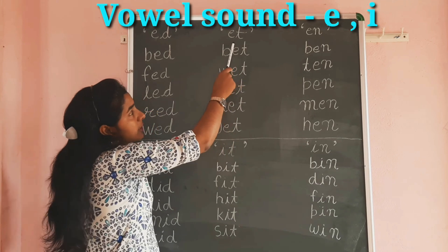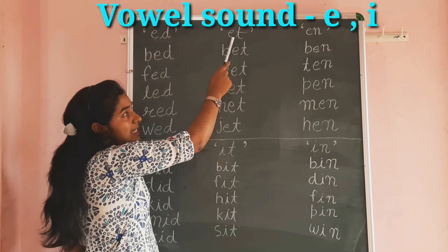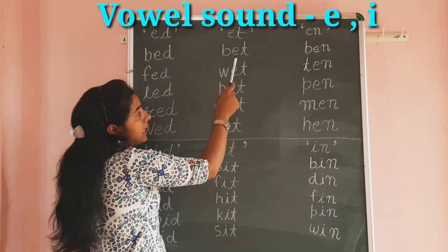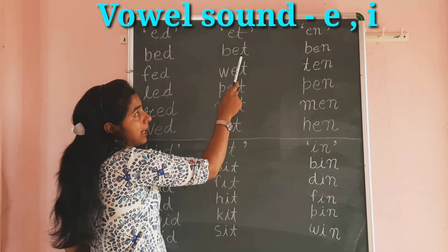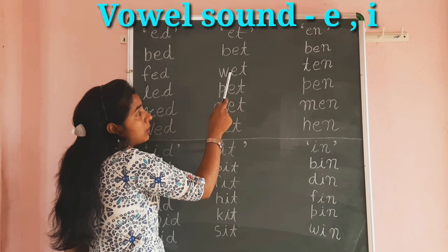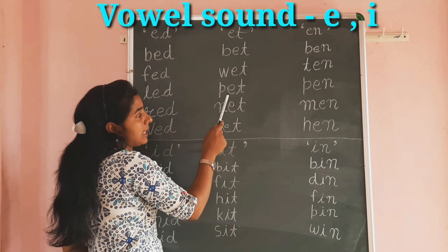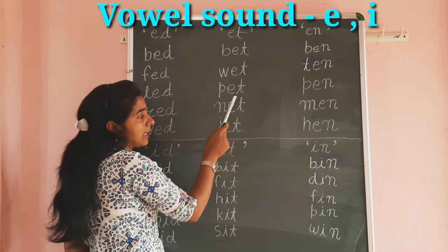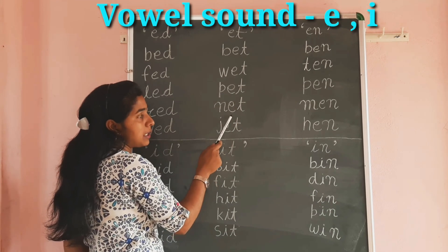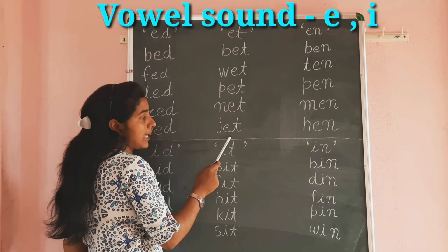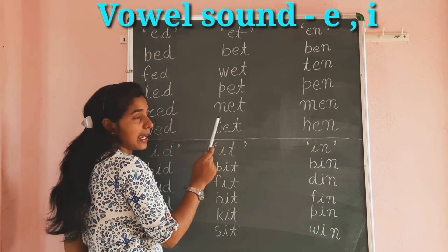Now we make words with the help of E-T: B-E-T, Bet. W-E-T, Wet. P-E-T, Pet. N-E-T, Net. J-E-T, Jet.